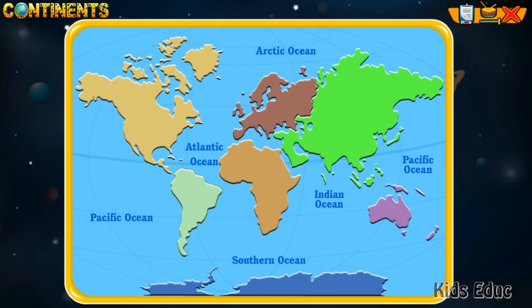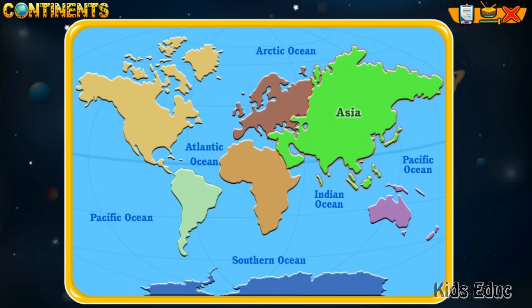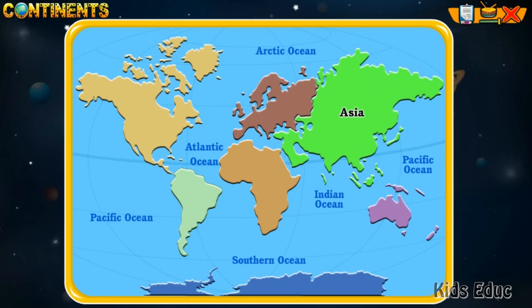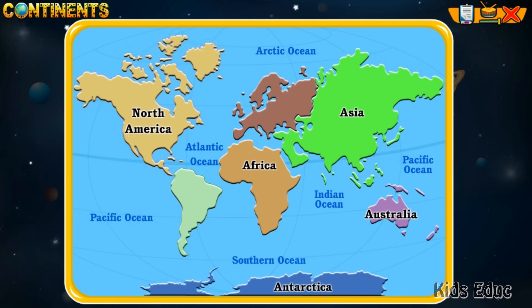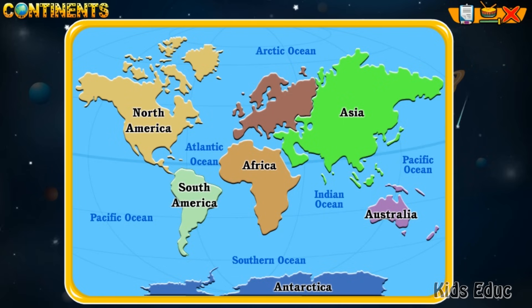Earth has seven continents: Asia, Australia, Africa, Antarctica, North America, South America, and Europe.